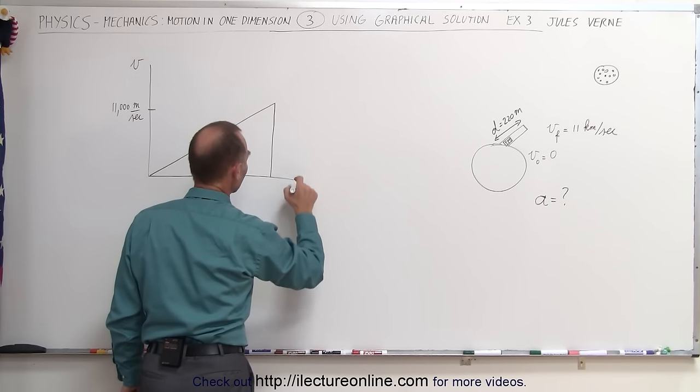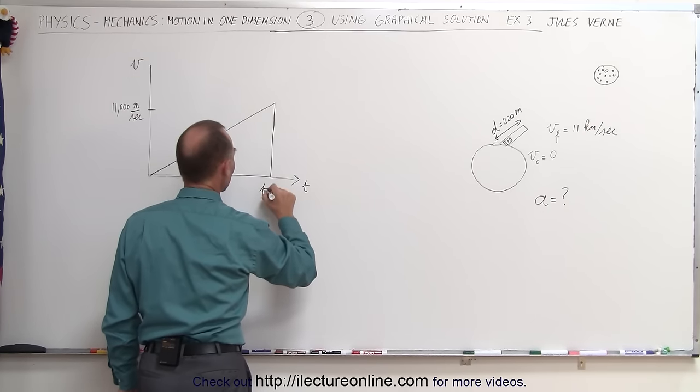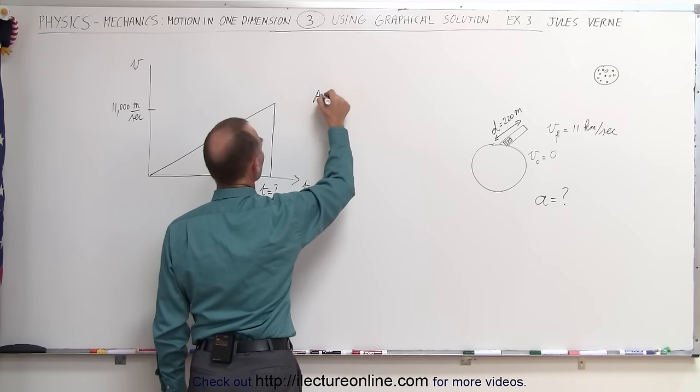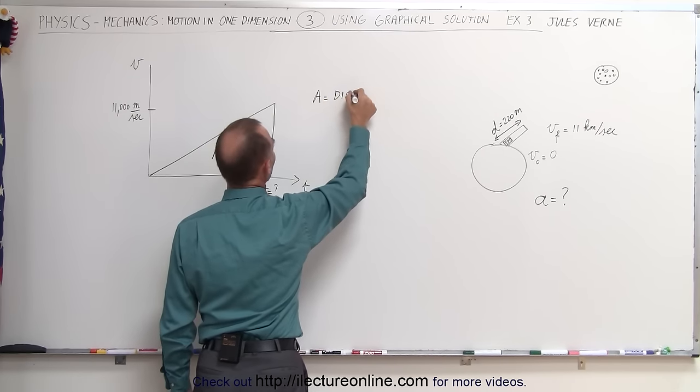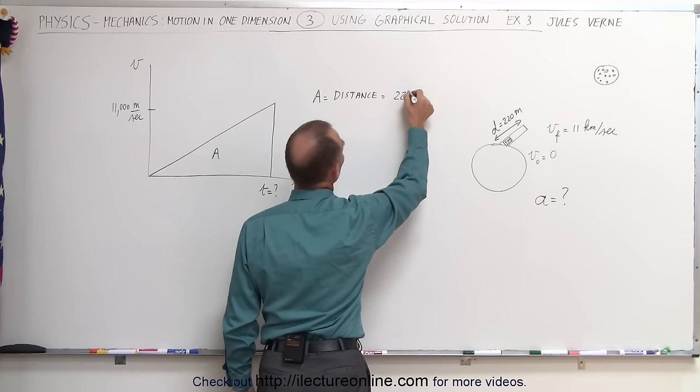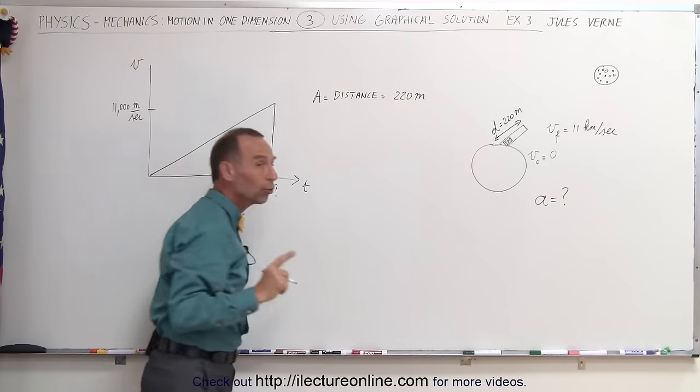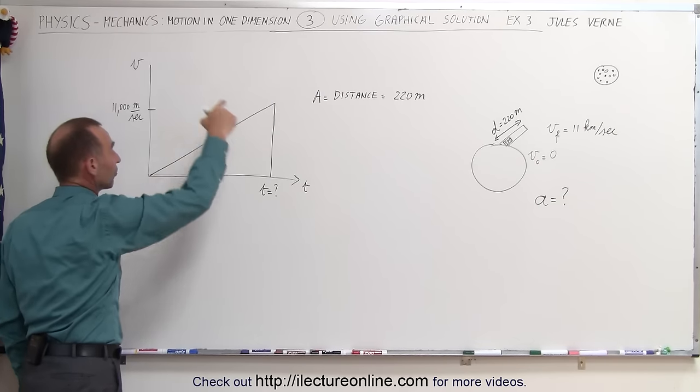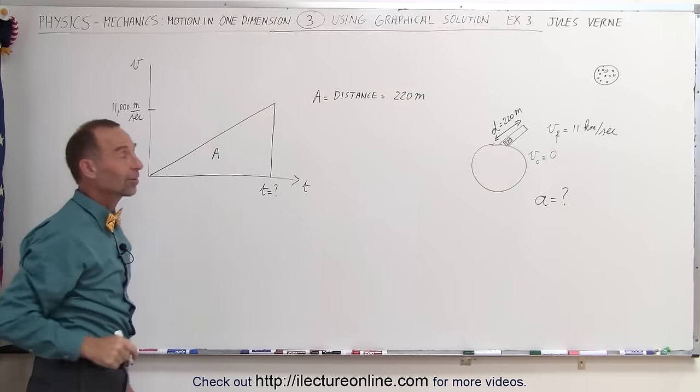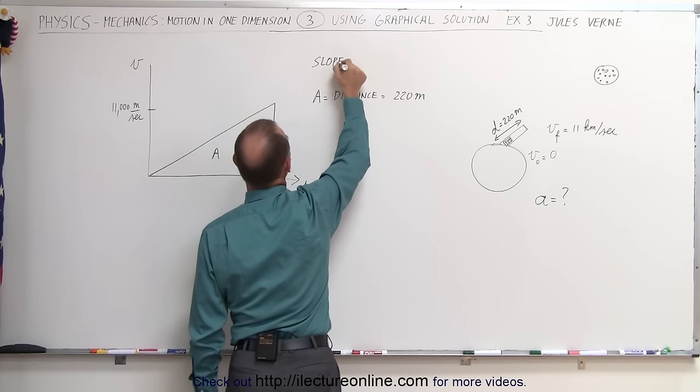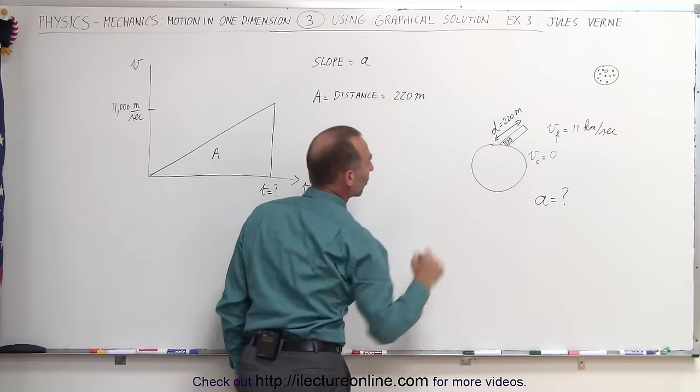The time is unknown, but the area represents the distance traveled during that acceleration, which equals 220 meters. Also realize that the slope of this velocity versus time graph represents acceleration. The slope equals the acceleration, which is what we're trying to find.